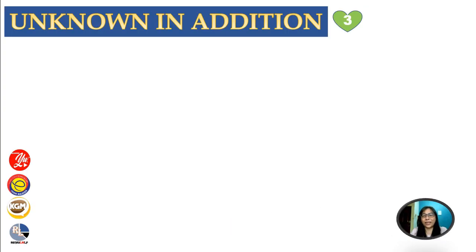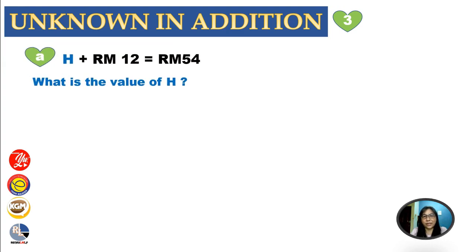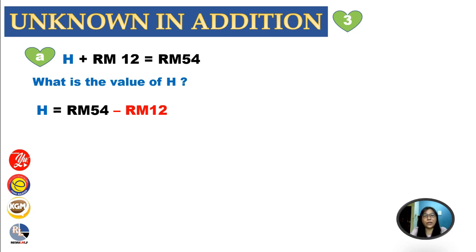Now let's look at the question with an unknown in addition. Very simple — the question is: H plus RM12 equals RM54. What is the value of H? Using the algebra method: H equals RM54 minus RM12. The answer is RM42.